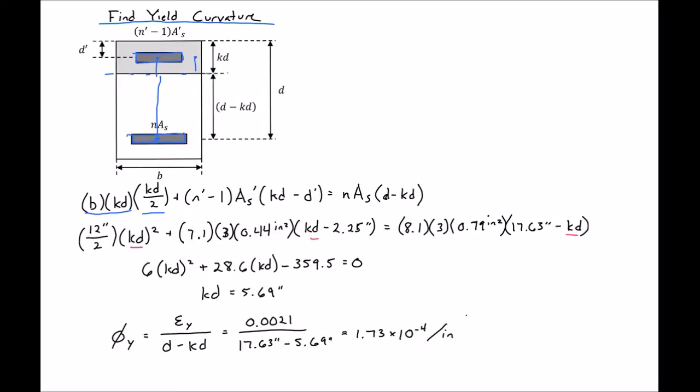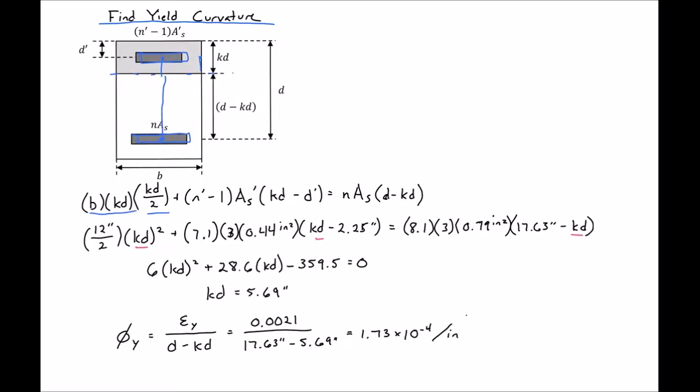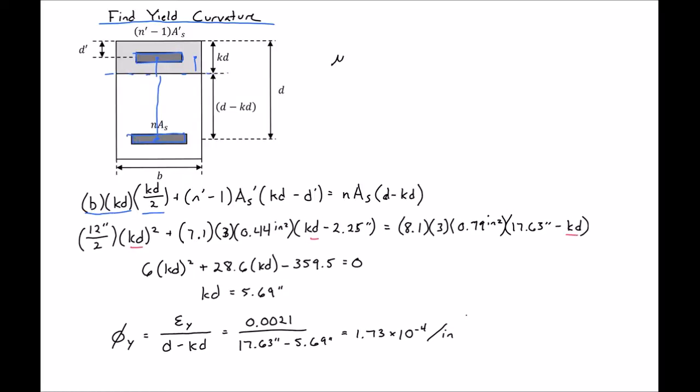We can then calculate our curvature ductility, which is just equal to our ultimate curvature, which we found to be 9.52 times 10 to the negative 4th, divided by our yield curvature, which is 1.73 times 10 to the negative 4th. This will give us a curvature ductility of 5.5.